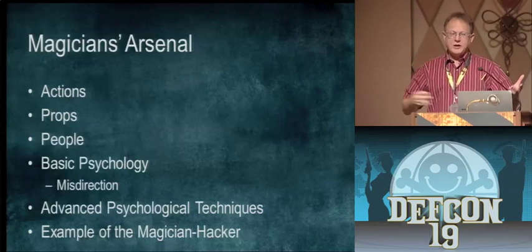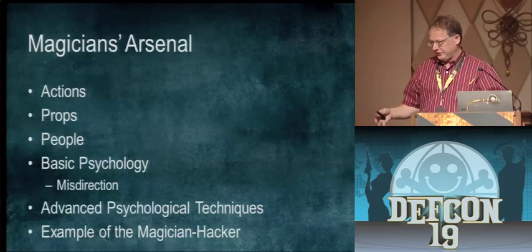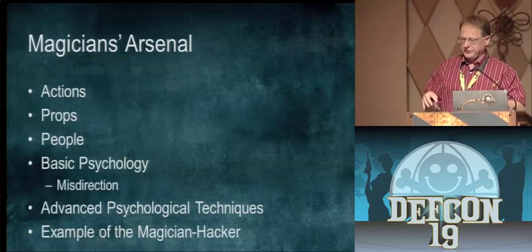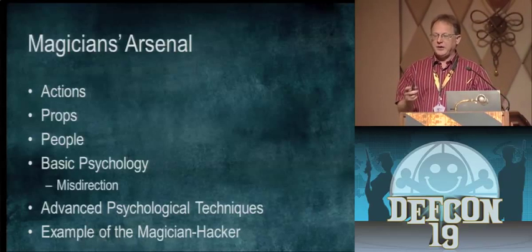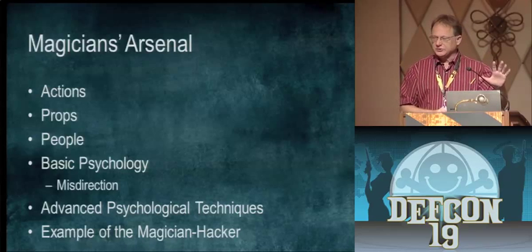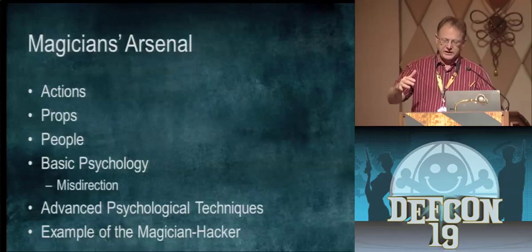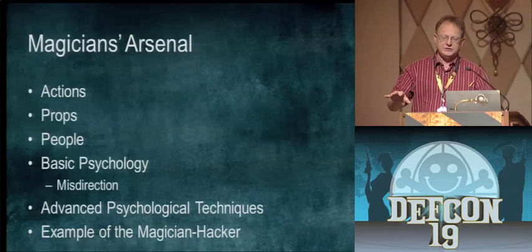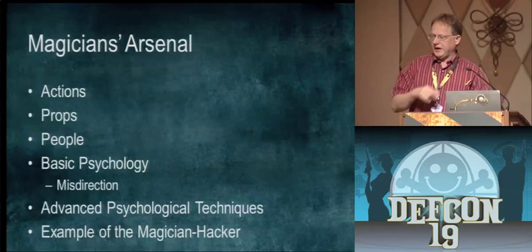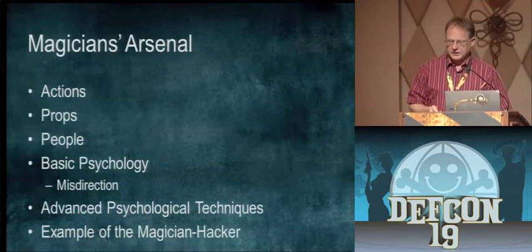What I'm going to do is talk about the magician's toolkit — the different things they use to accomplish illusions. Then I'll talk about the similarities between magician's tools and hacking tools. I'll cover basic psychology and some advanced psychology. And then I'll give an example, putting it all together, showing how I would apply it if I was hacking into a company.